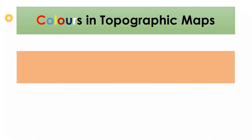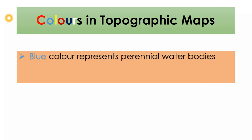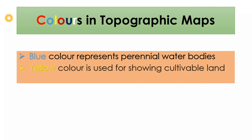Welcome back. Let's continue with the previous topic. In the previous class we were discussing about the use of various colors in topographic maps and their meanings. We have already discussed two colors: blue, which is used for showing perennial water bodies, and yellow, which is mainly used for showing areas under cultivation.